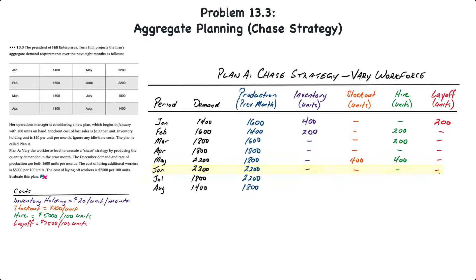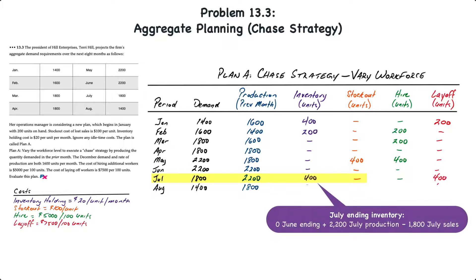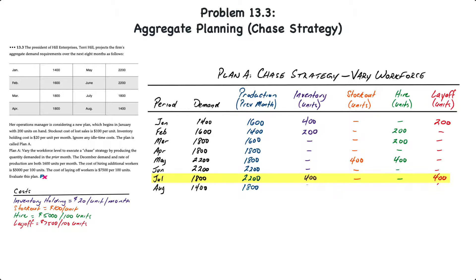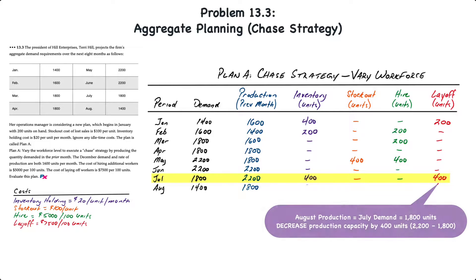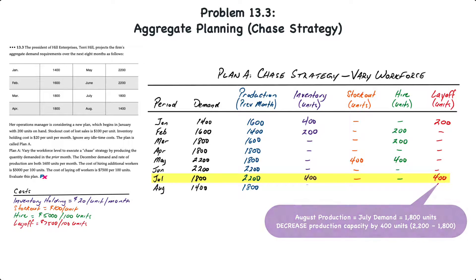In July, 2,200 units are produced but only 1,800 are demanded, resulting in ending inventory of 400 units and no stockout costs. Looking ahead to August production: 1,800 units were demanded in July, so that will be August's production. The company is currently producing 2,200 units, so production capacity will have to decrease by 400 units, requiring some layoffs.